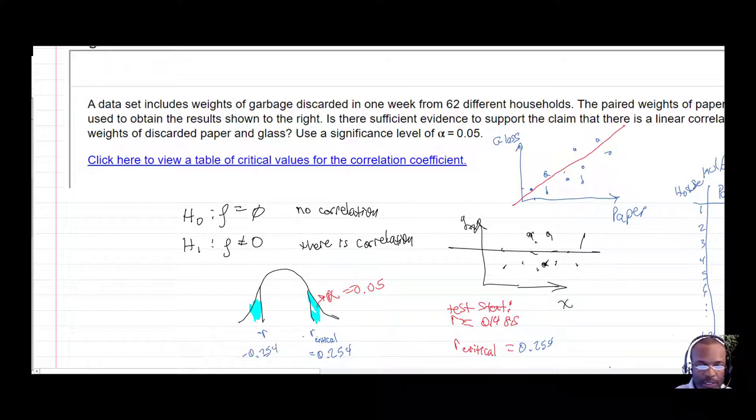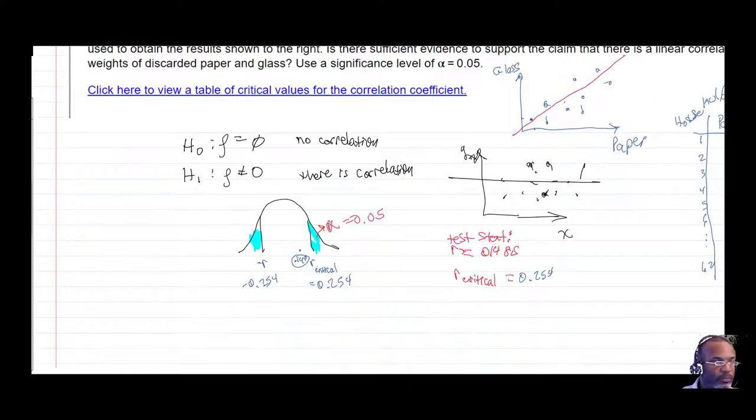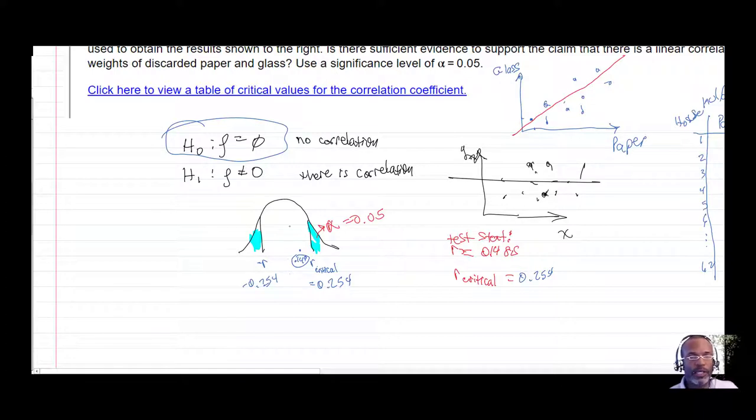And then our test statistic falls over here at 0.14. I'll shorten it to 0.149. Therefore we don't fall into the rejection region, and so we will fail to reject the null hypothesis. So in failing to, we don't have enough evidence to reject the null hypothesis. So if we're not going to reject it, let's go ahead and grab it. Now, what does it mean by not rejecting it?